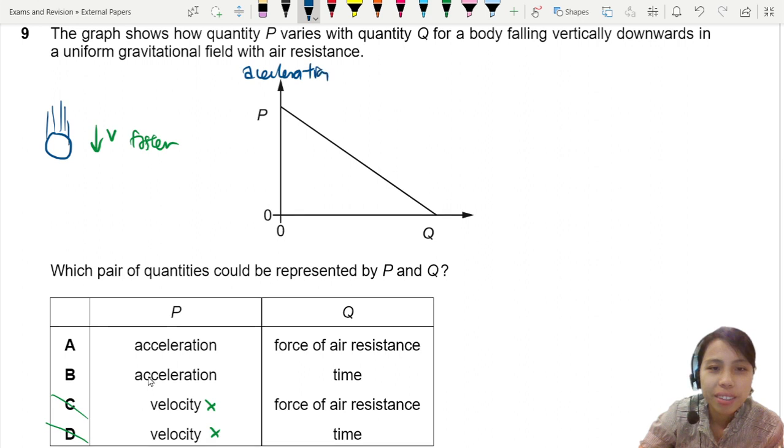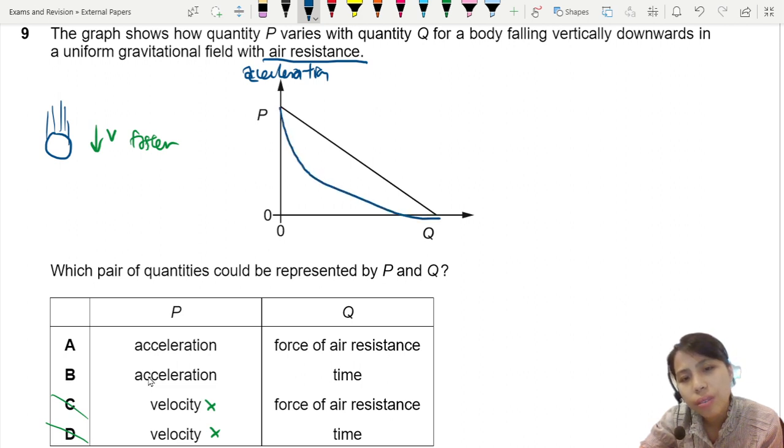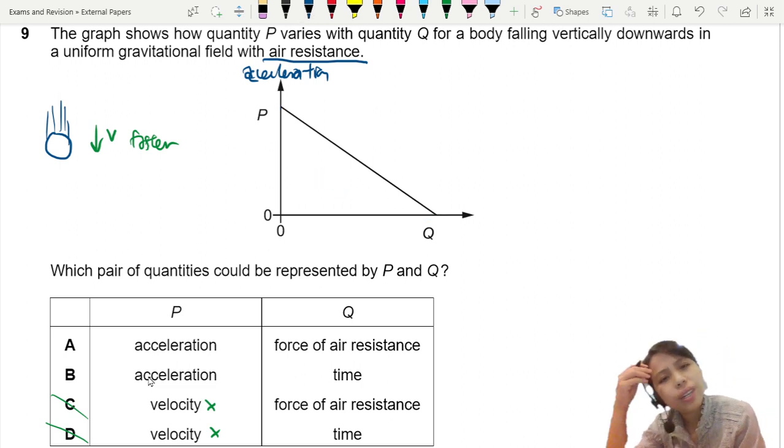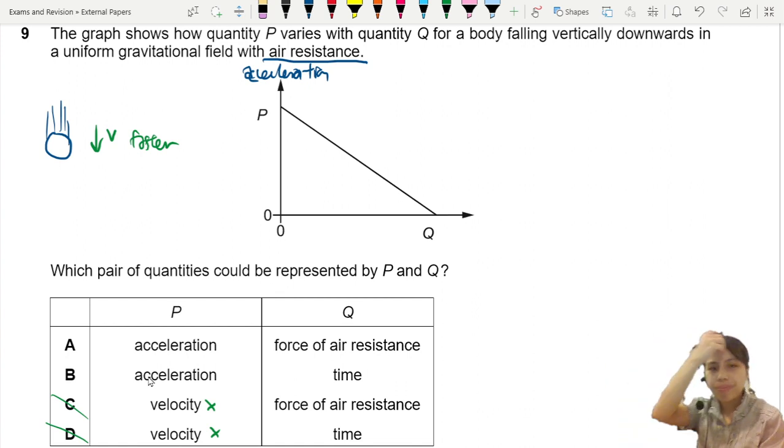Acceleration. Is it acceleration against time or acceleration against force of air resistance? If we say acceleration against time, there is air resistance, yes, but if you remember how these graphs look like, they're actually curves. You start off and you slowly decrease. Why this one is straight? Scratch your head. I scratch my head. You scratch your head. What about force of air resistance?